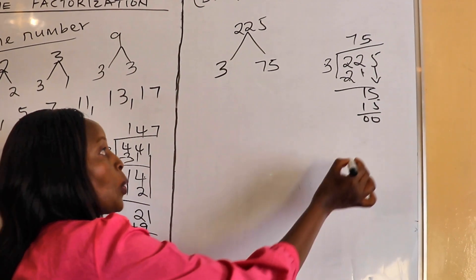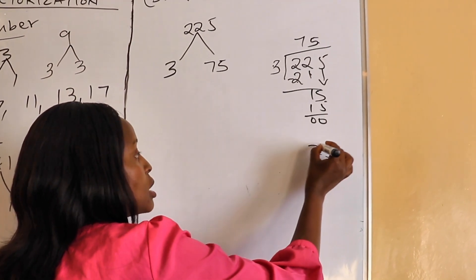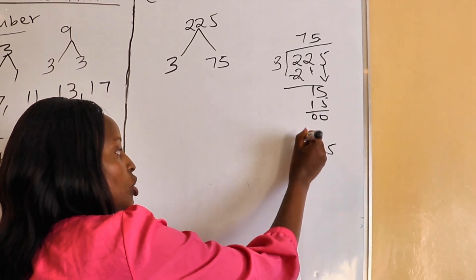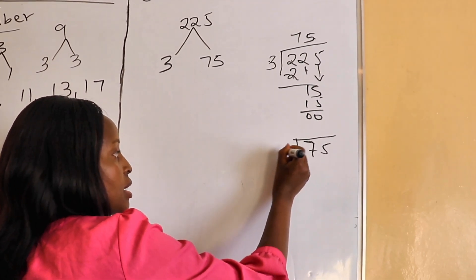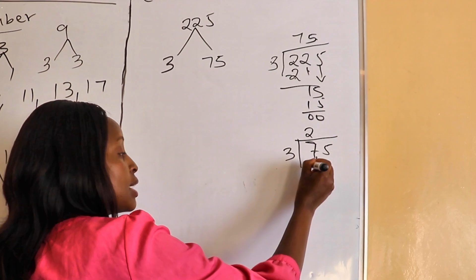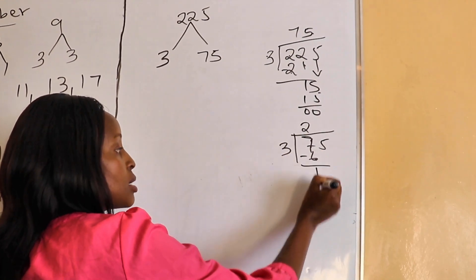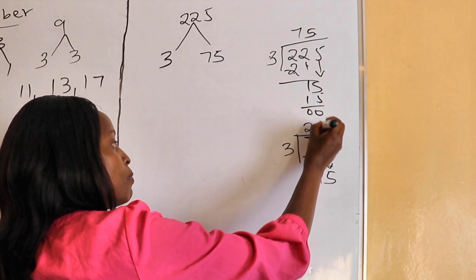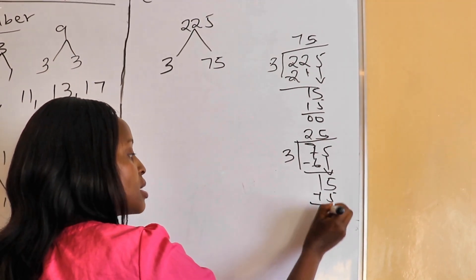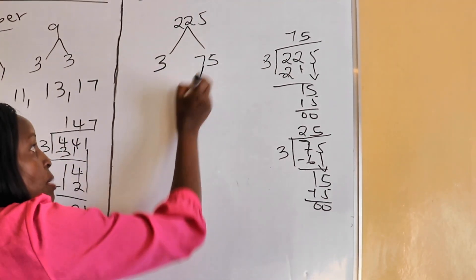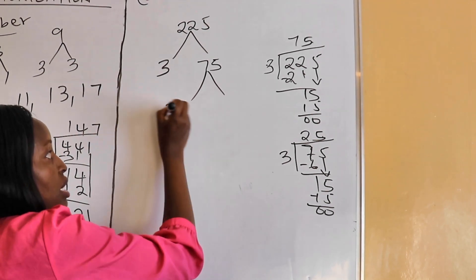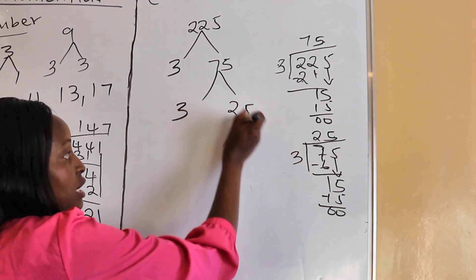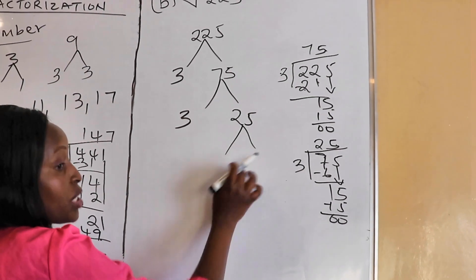Next, 75 cannot be divided by two because it ends in five. We try three: 7 divided by 3 is 2 (because of 6), take away gives 1, drop 5 — 15 divided by 3 is 5. We form the next branch with three on this side and 25 on this side.